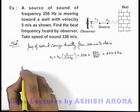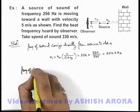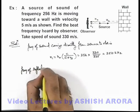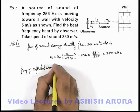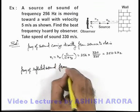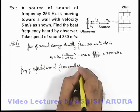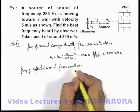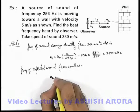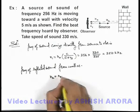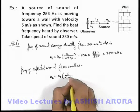So we can find out the frequency of reflected sound from the wall. This can be given as n₂, and this n₂ we can write as n₀ × c/(c - vₛ).